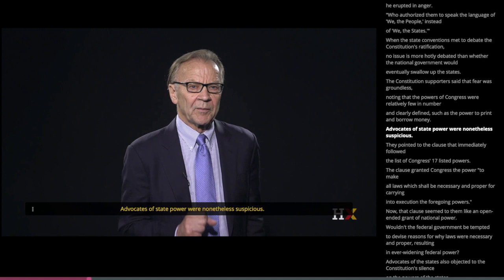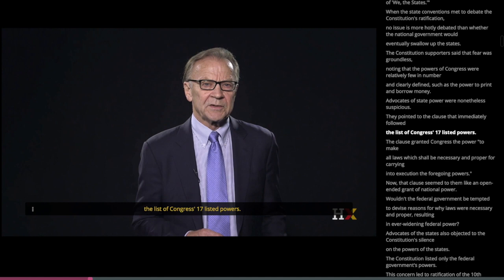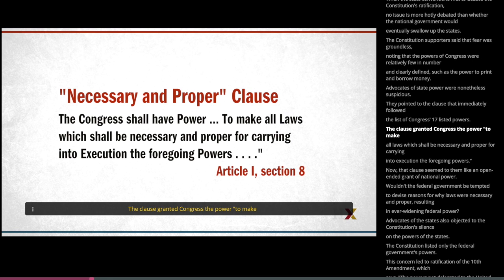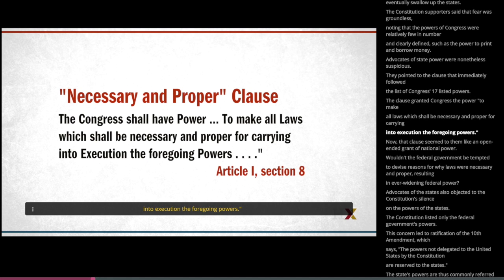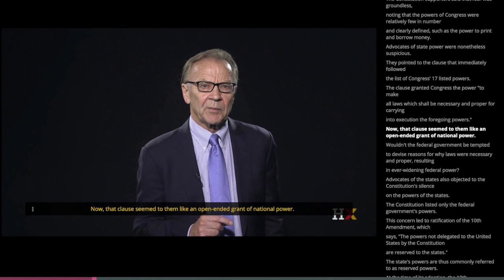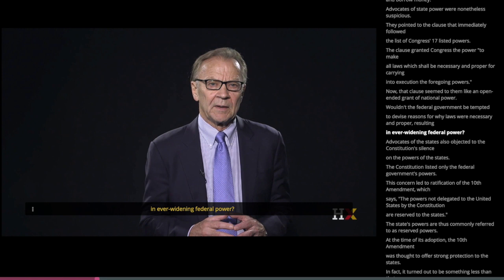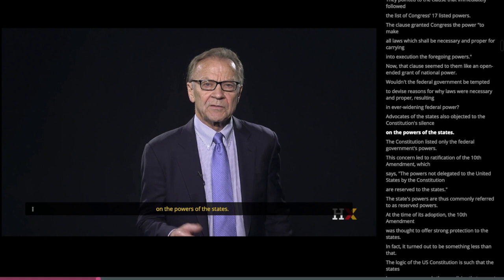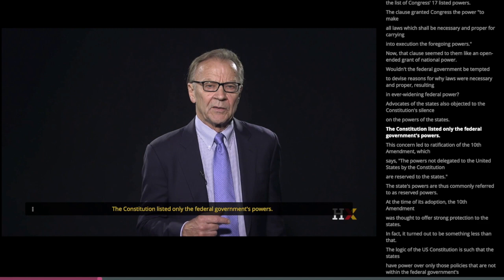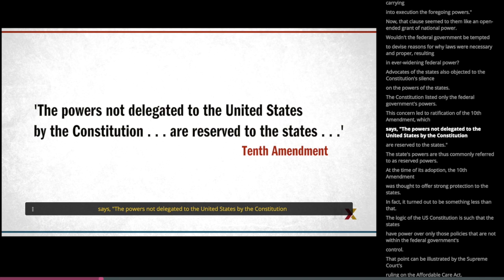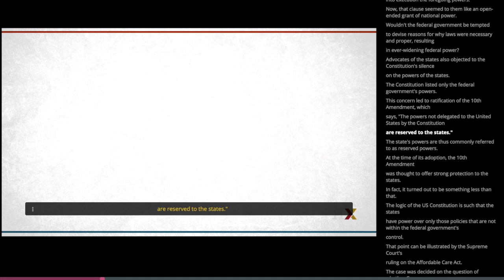Advocates of state power were nonetheless suspicious. They pointed to the clause immediately following the list of Congress's 17 listed powers — the Necessary and Proper Clause — which granted Congress the power to make all laws which shall be necessary and proper for carrying into execution the foregoing powers. That clause seemed like an open-ended grant of national power. Advocates of the states also objected to the Constitution's silence on the powers of the states. This concern led to ratification of the Tenth Amendment, which says the powers not delegated to the United States by the Constitution are reserved to the states — commonly referred to as reserved powers.